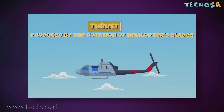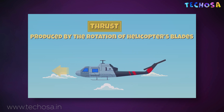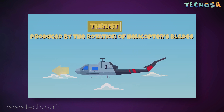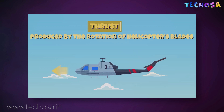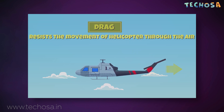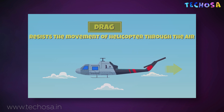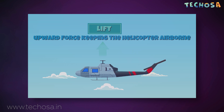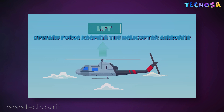Thrust is the force produced by the rotation of the helicopter blade. Its direction can be forward, backward, sideward, or vertical. Drag is the force that opposes the movement of the helicopter through the air. Finally, lift is the upward force acting on the helicopter that pushes it up and makes it fly. For any object that flies in the air, it needs a force of lift that pushes it upwards. But for that to happen, the air must pass through an airfoil.